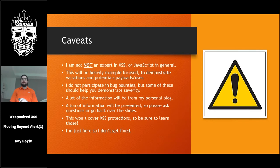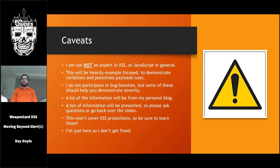A few caveats before I begin. I'm definitely no expert in cross-site scripting or JavaScript in general. I'm a Pentester and a Red Teamer by trade, so I am familiar with it, but there are probably those of you out there who know more than me. This is going to be a very example-heavy presentation, so the slides will be available eventually. I also don't participate in bug bounties, but I know that some of them will want you to prove the severity to get that higher bounty, so this should hopefully help with that.